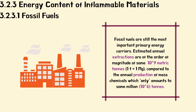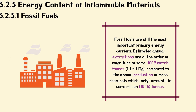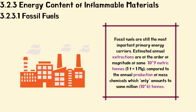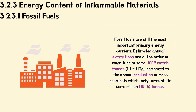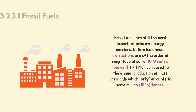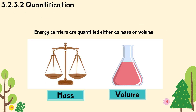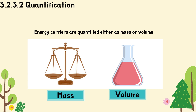We will now discuss the energy content of inflammable materials, starting with fossil fuels. Fossil fuels are still the most important primary energy carrier. The estimated annual extraction is of the order of magnitude of some gigametric tonnes, compared to the annual production of mass chemicals which only amounts to some millions of megatonnes. For quantification, energy carriers are quantified either in mass or volume — the standard cubic meter in the case of gases. For energy assessment, and also from the practical view of quality, energy units are however very meaningful.